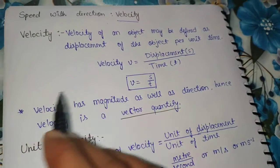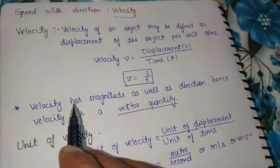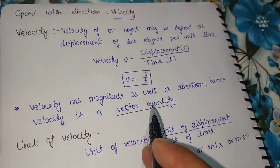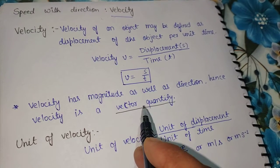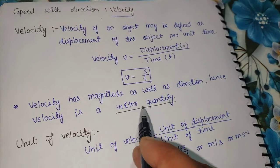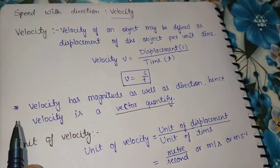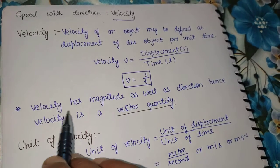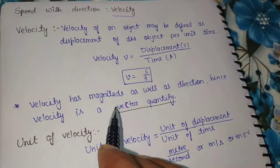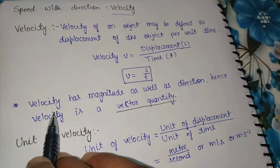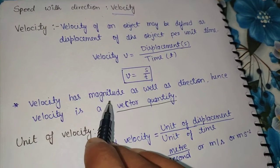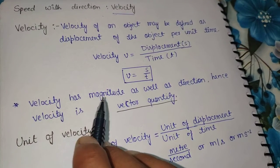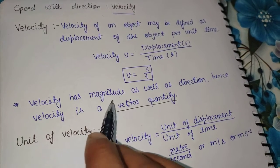Since velocity has magnitude as well as direction, velocity is a vector quantity. All physical quantities are divided into two groups: vector and scalar. Speed is a scalar quantity and velocity is a vector quantity. Speed has only magnitude, not direction. Velocity has magnitude as well as direction.